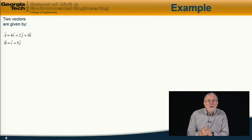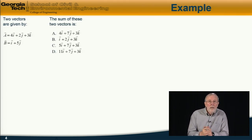Next, we have two vectors which are given by these two equations. A is 4i plus 2j plus 3k. And b is equal to i plus 5j. And the first question is, the sum of these two vectors is which of these?